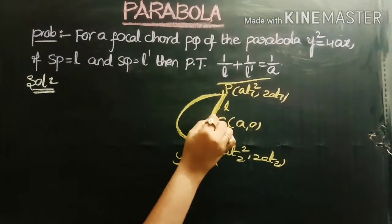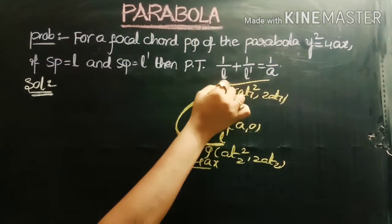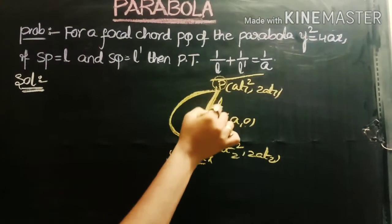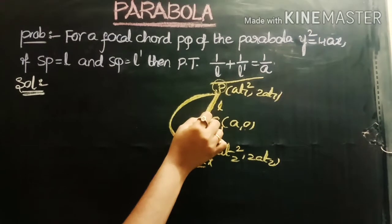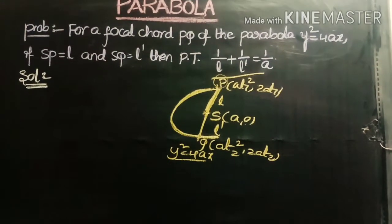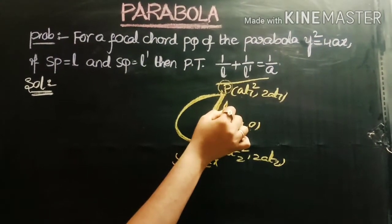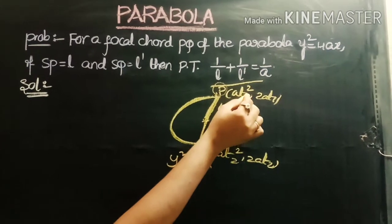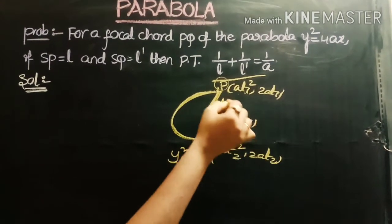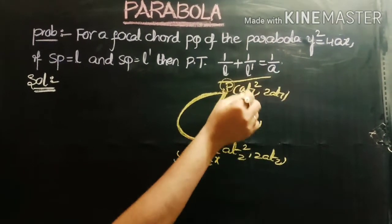Now, SP is the focal distance — the distance of point P from the focus. The formula for focal distance is x + a, where x is the x-coordinate of the point. Here, the x-coordinate of P is aT1², so L = aT1² + a, which equals a(T1² + 1).